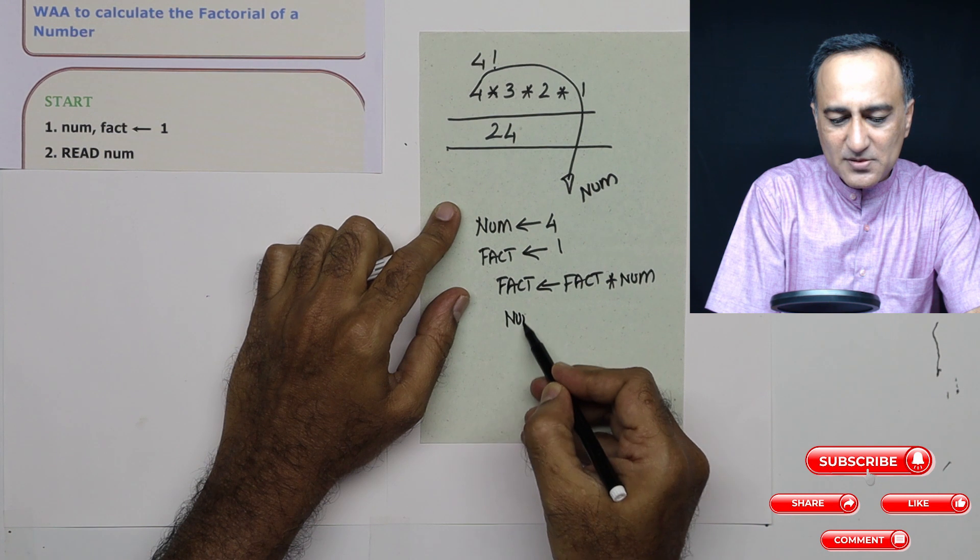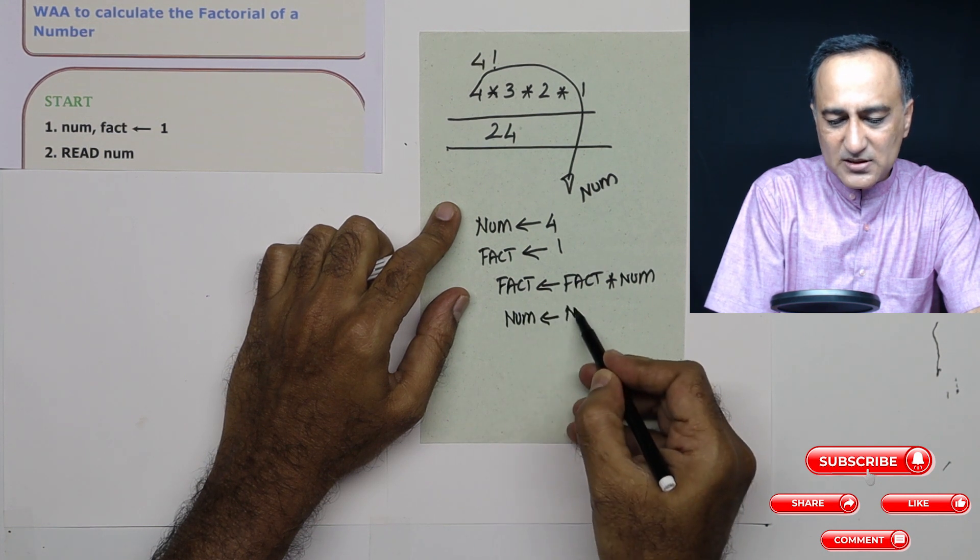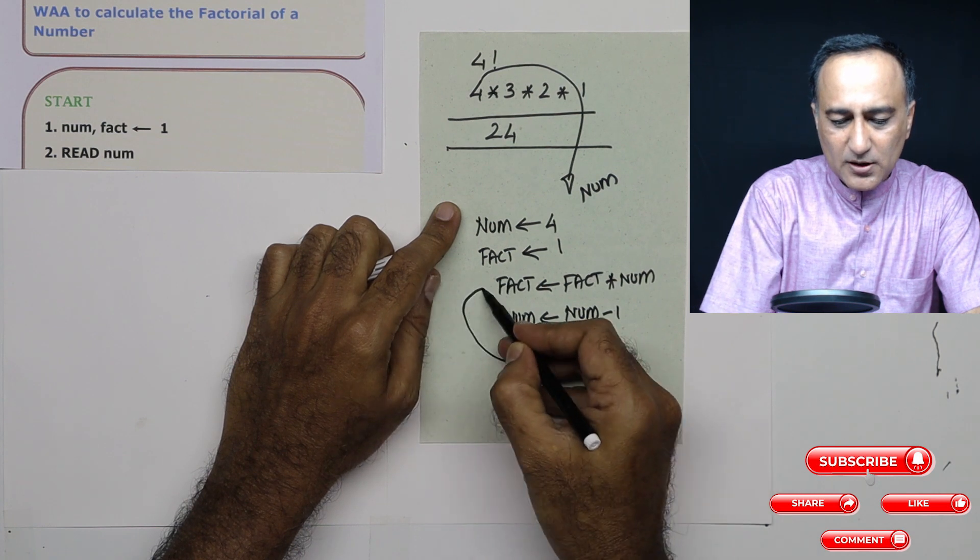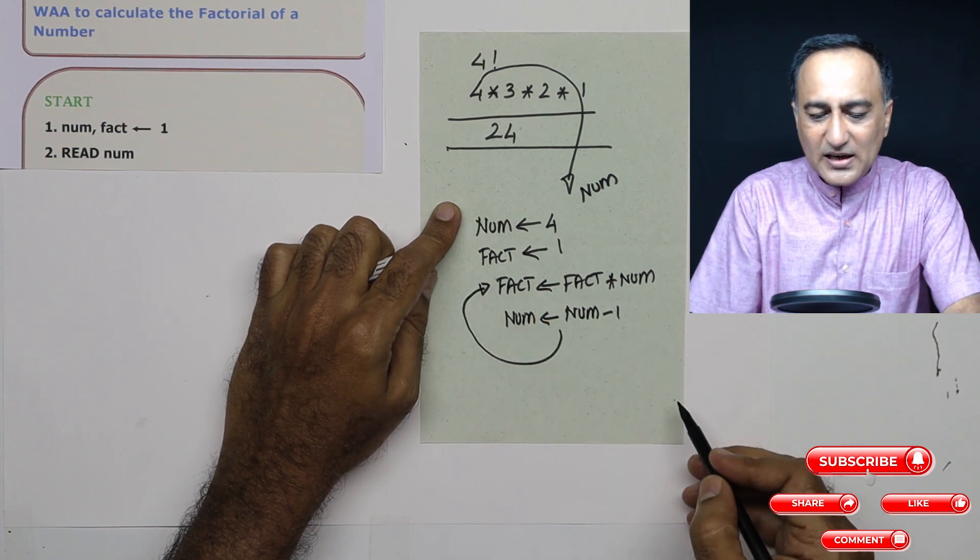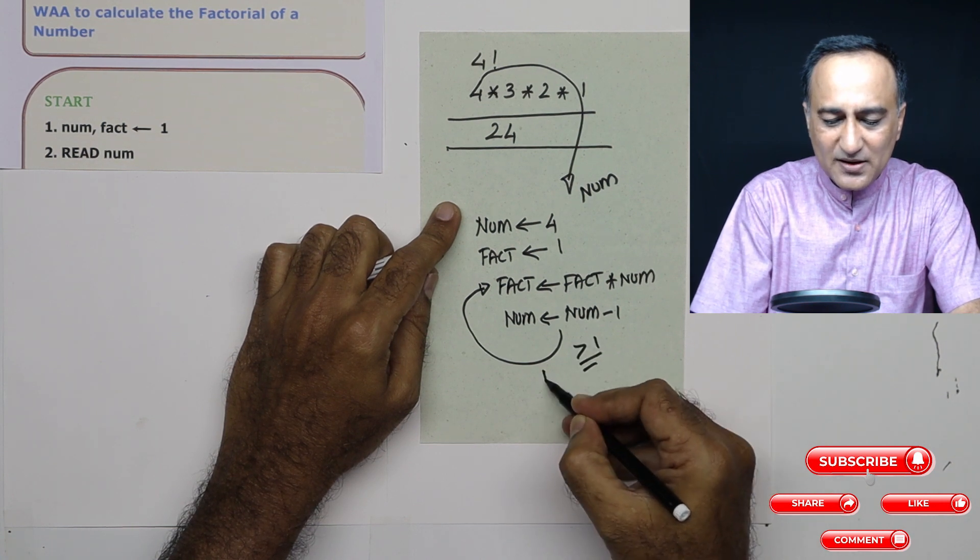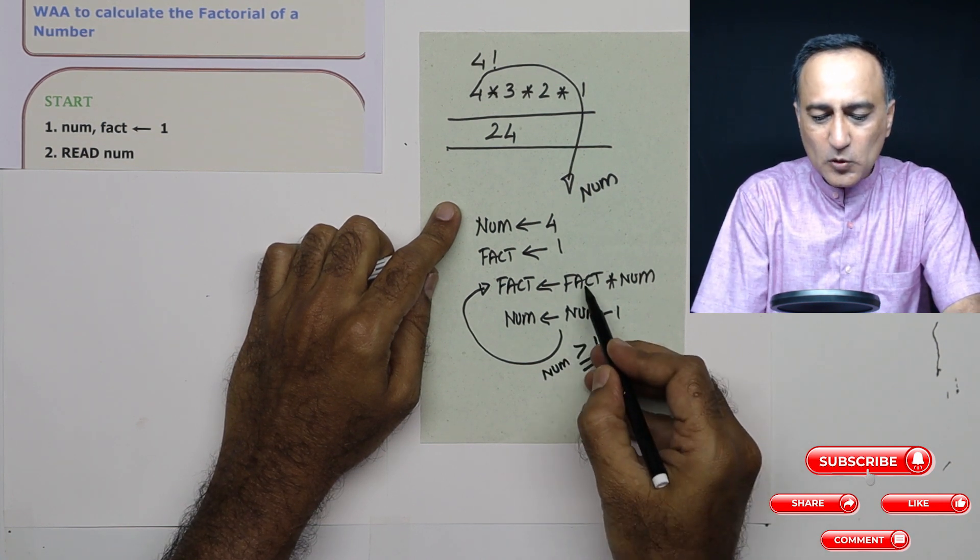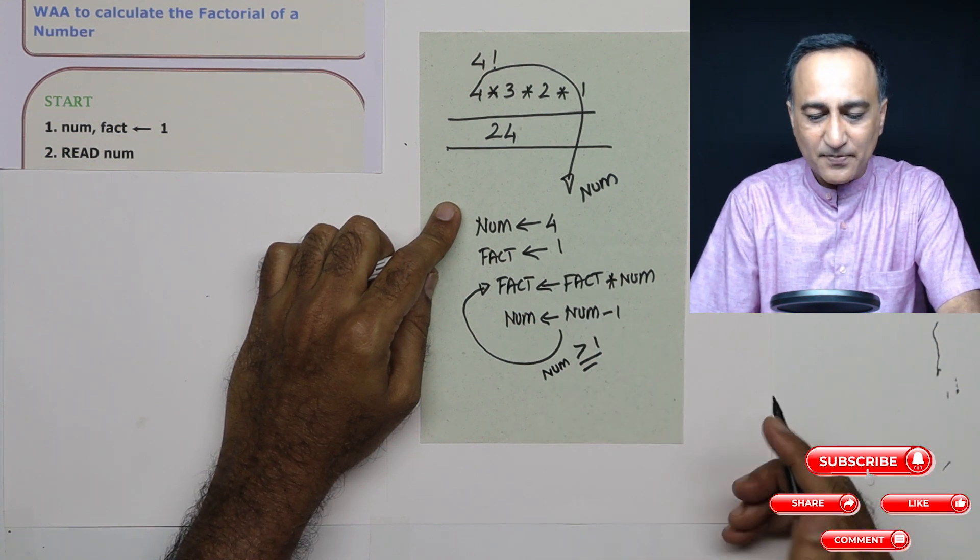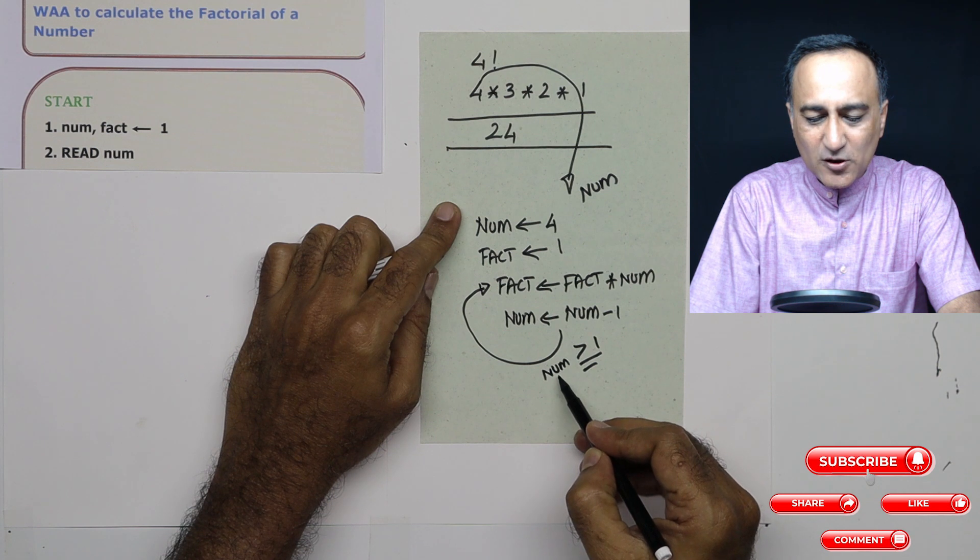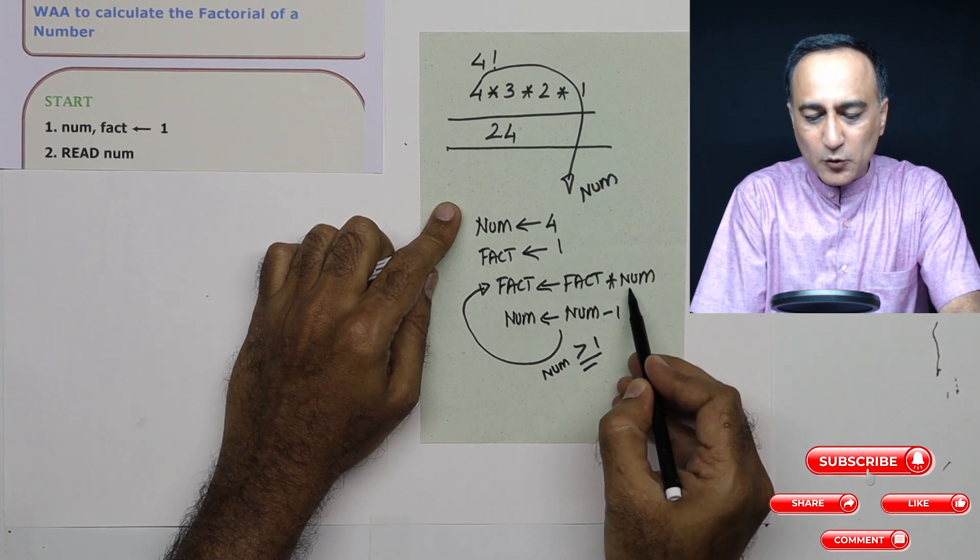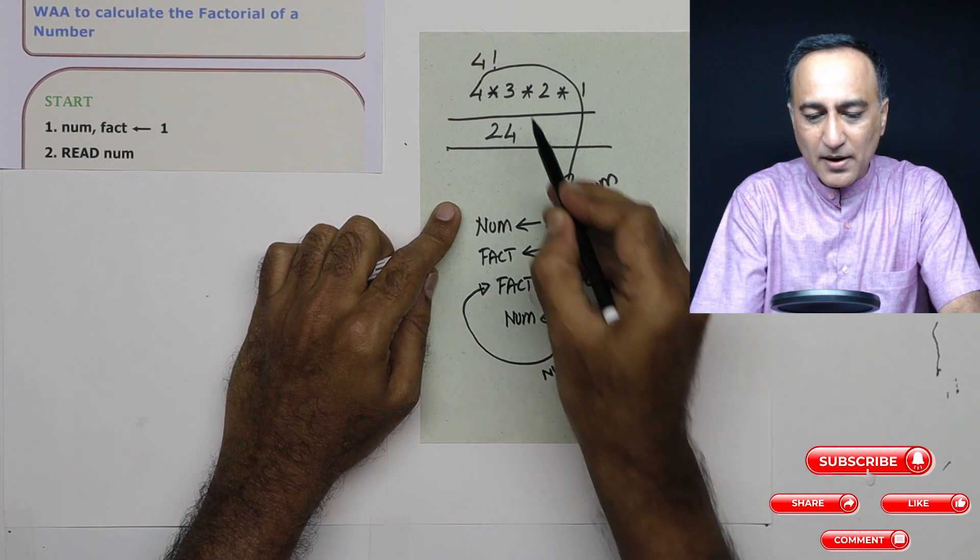Then what I'm doing is I'm saying number is number minus one. So this particular process here, I keep repeating, as long as the value of number happens to be greater than one, because there is no point of multiplying factorial by one because it is going to remain the same. So as long as the value of number is greater than one, I am going to multiply fact into number and keep reducing number by one.